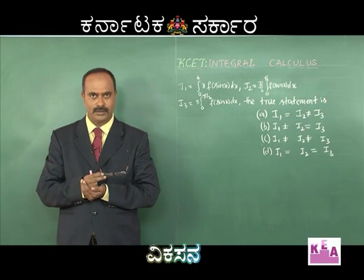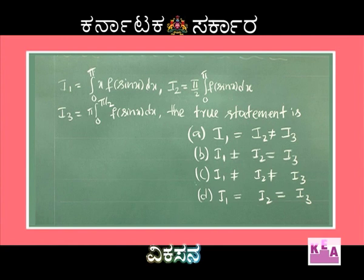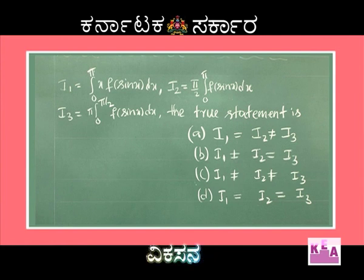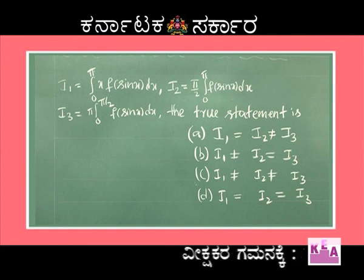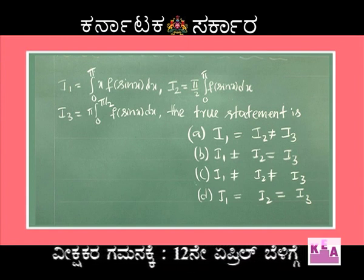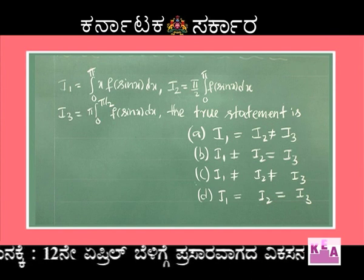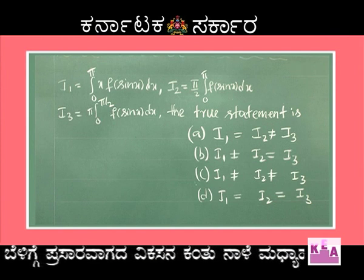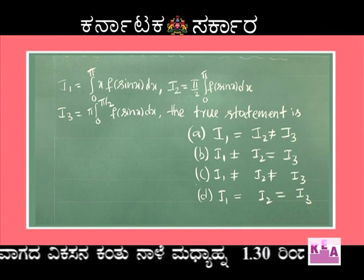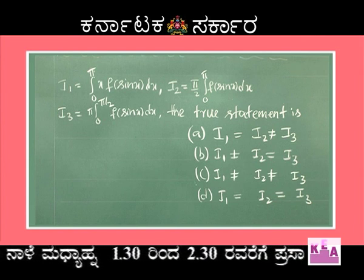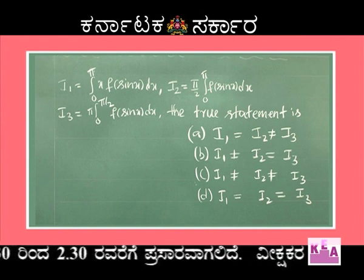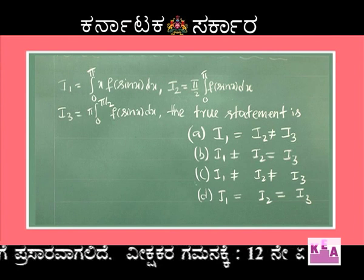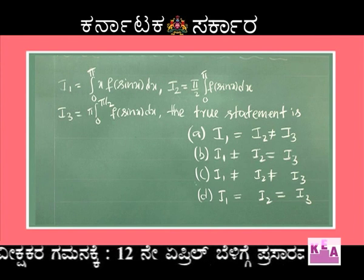This is a theory-based question. i1 = ∫₀^π x·f(sin x)dx, i2 = (π/2)·∫₀^π f(sin x)dx, i3 = π·∫₀^(π/2) f(sin x)dx. The true statement among four options: (a) i1=i2≠i3, (b) i1≠i2=i3, (c) i1≠i2≠i3, (d) i1=i2=i3.